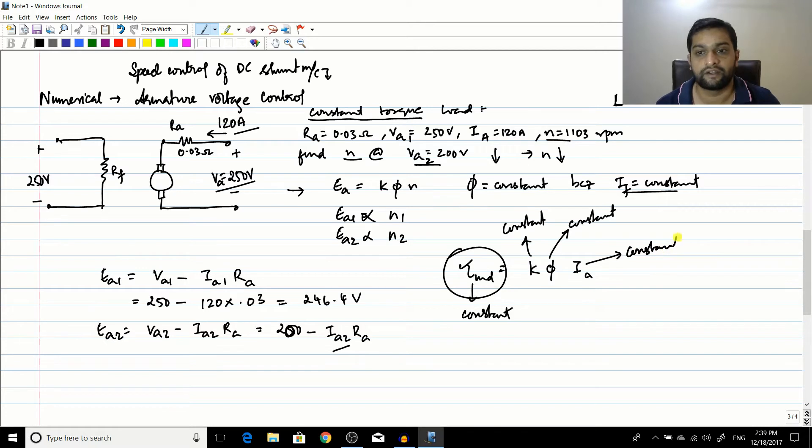Therefore IA is not going to change, so it is 200 minus the initial value 120 into 0.03. So IA1 will be equal to IA2, and this particular value will give you 196.4 volts.